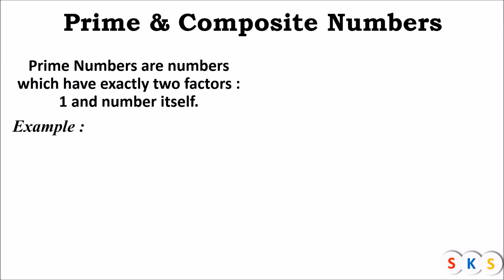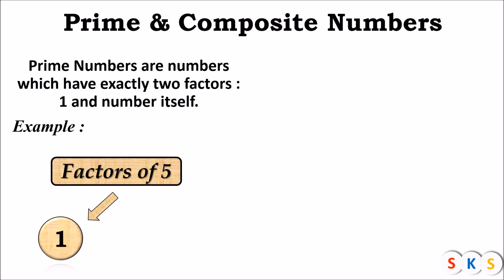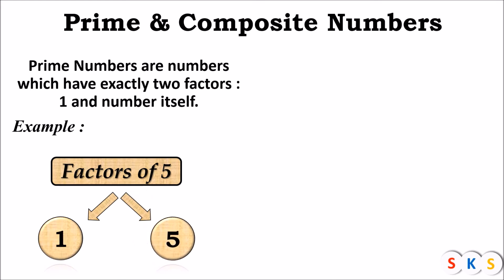Let's see an example. Here we have a number 5. Now we will find all factors of 5. Here 1 is one of the factors of 5 because 1 divides 5 completely. The other factor of 5 is 5 itself. So you can see that number 5 has exactly two factors, that is 1 and 5. Hence 5 is an example of a prime number.